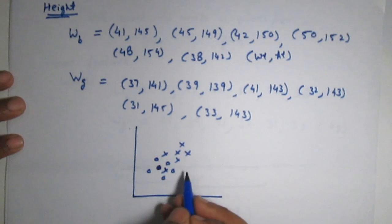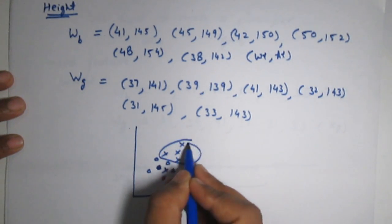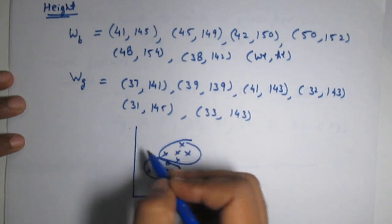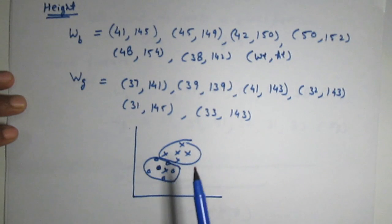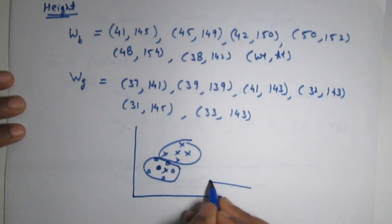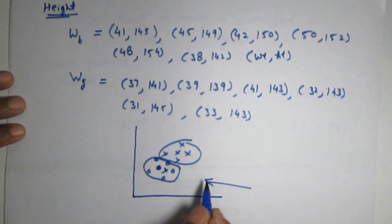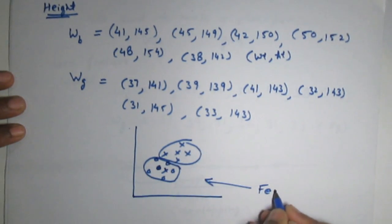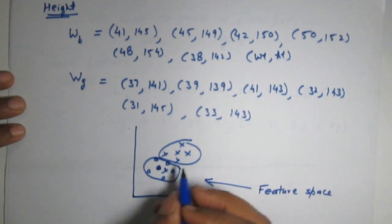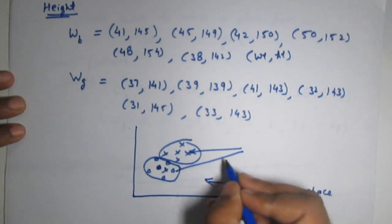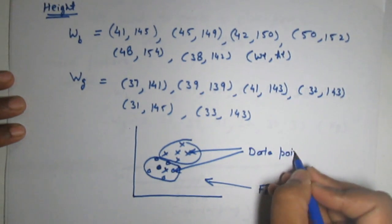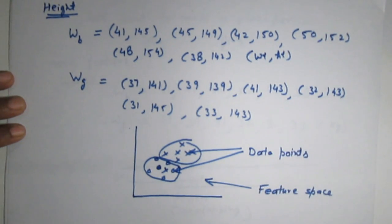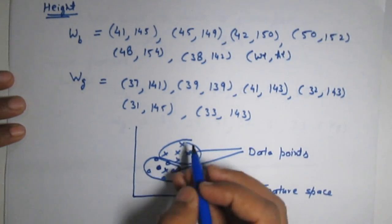We can see that the overlapping region is reduced. As we increase the number of features, we can improve the performance of the classifier. The space in which we represent an object as a point is called feature space. These are called data points and these are class regions.